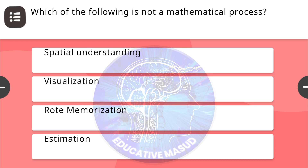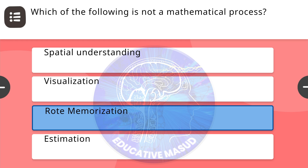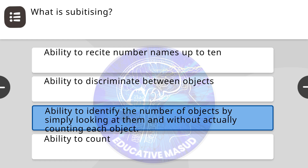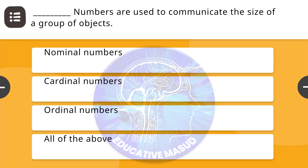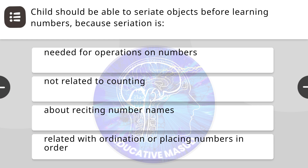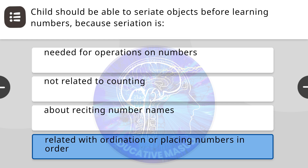Next question: which of the following is not a mathematical process? Correct answer is rote memorization. Next question: what is subitizing? Correct answer is the ability to identify the number of objects by simply looking at them without actually counting each object. Next question: blank numbers are used to communicate the size of a group of objects. Correct answer is cardinal numbers. Next question: a child should be able to seriate objects before learning numbers because seriation is related to ordination or placing numbers in order.